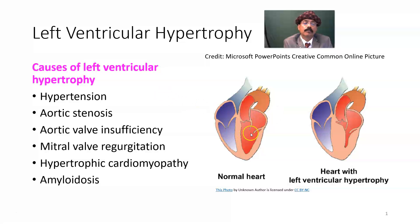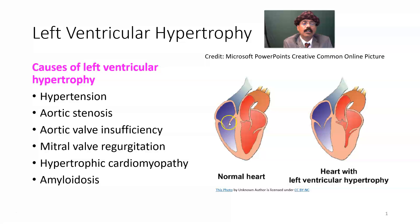We have two ventricles in our heart and two atria. This is the left ventricle, right ventricle, right atria, and this is the left atria. This is the mitral valve or left atrioventricular valve. This is the tricuspid valve or right atrioventricular valve. This is the valve at the beginning of the aorta — the aortic valve. So this is a normal heart.